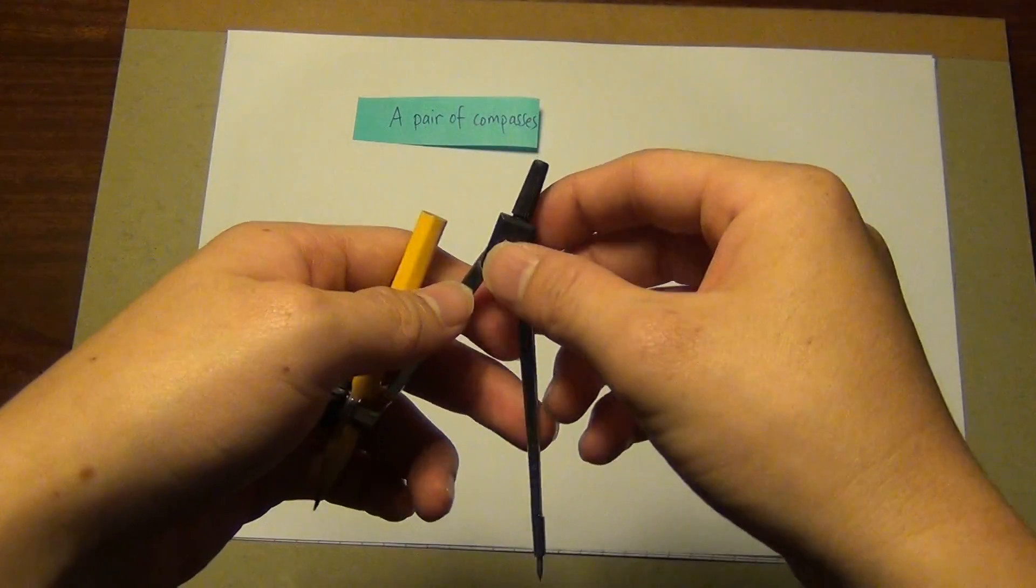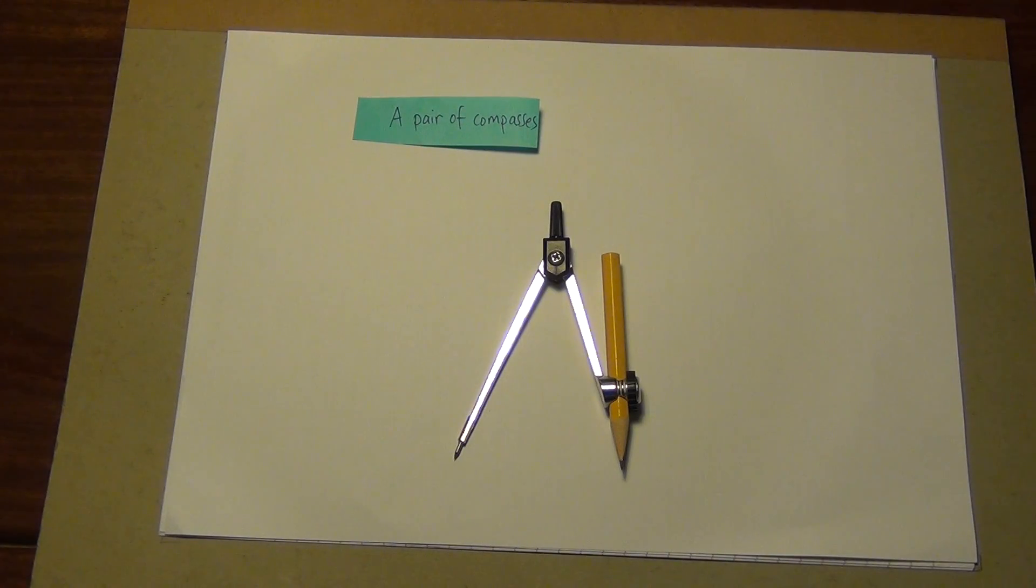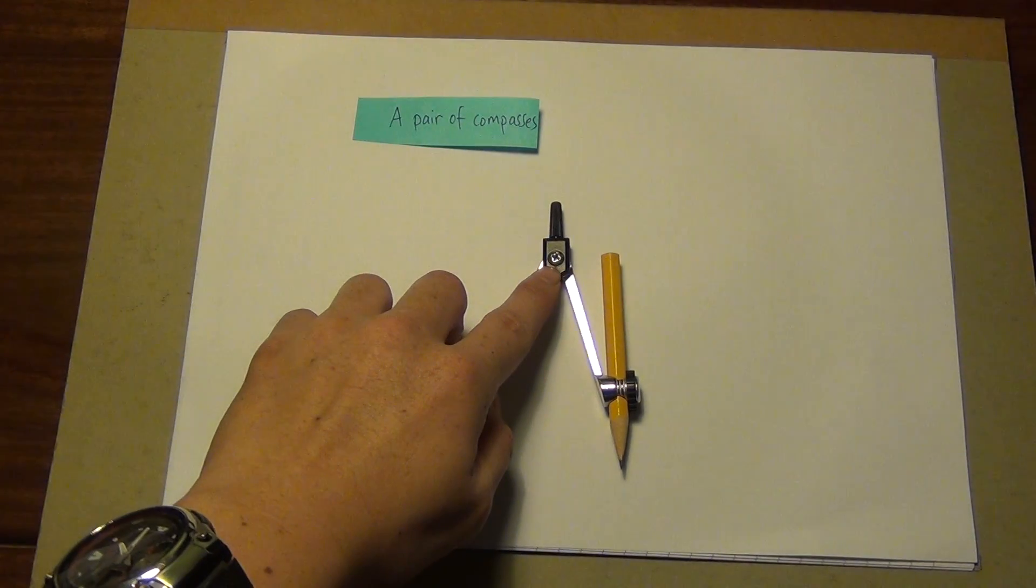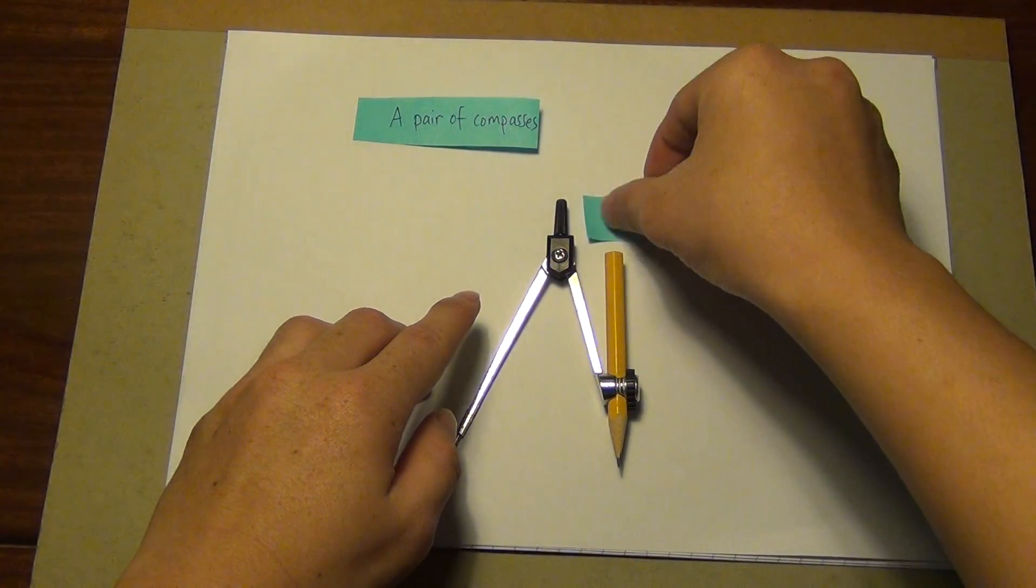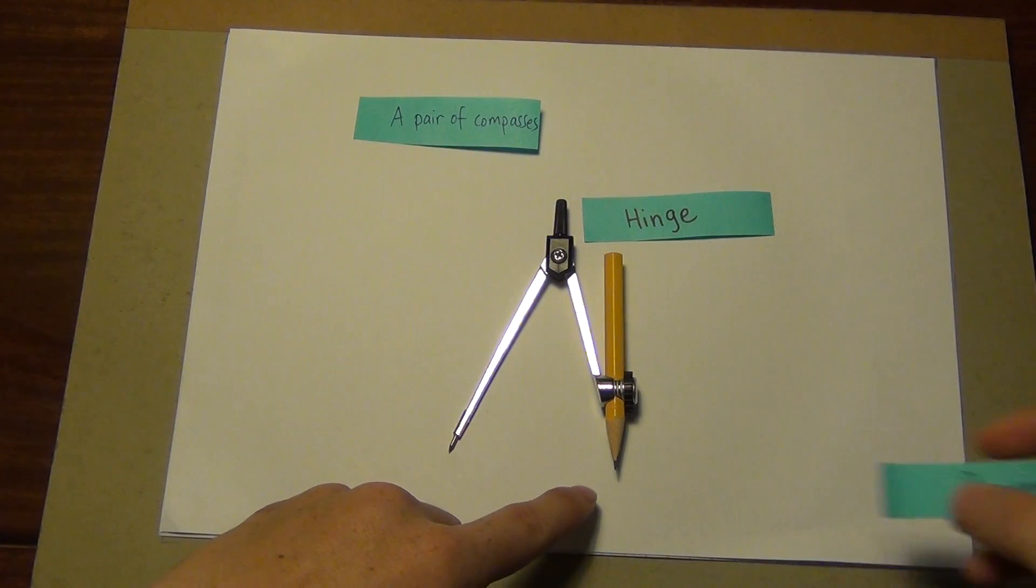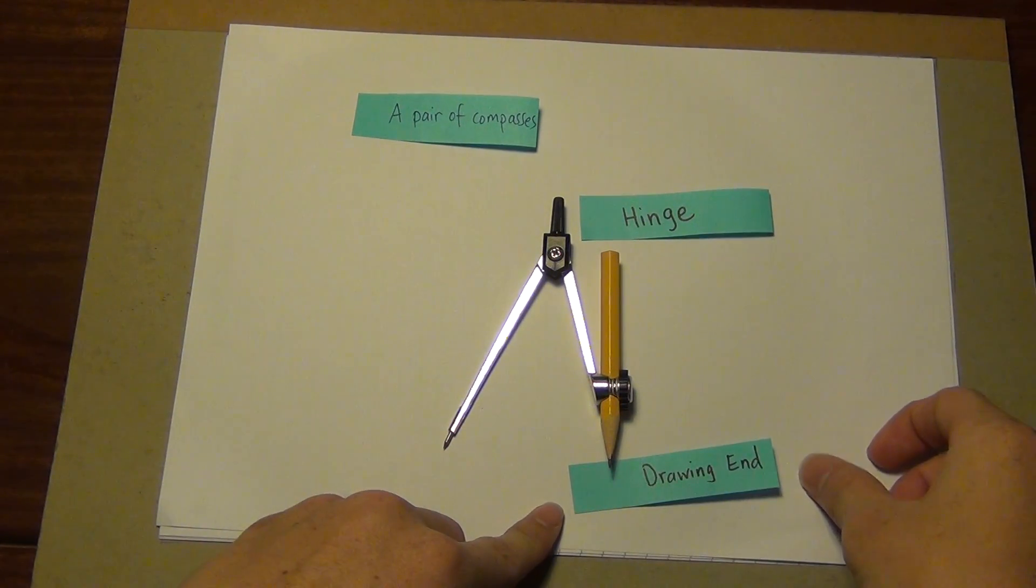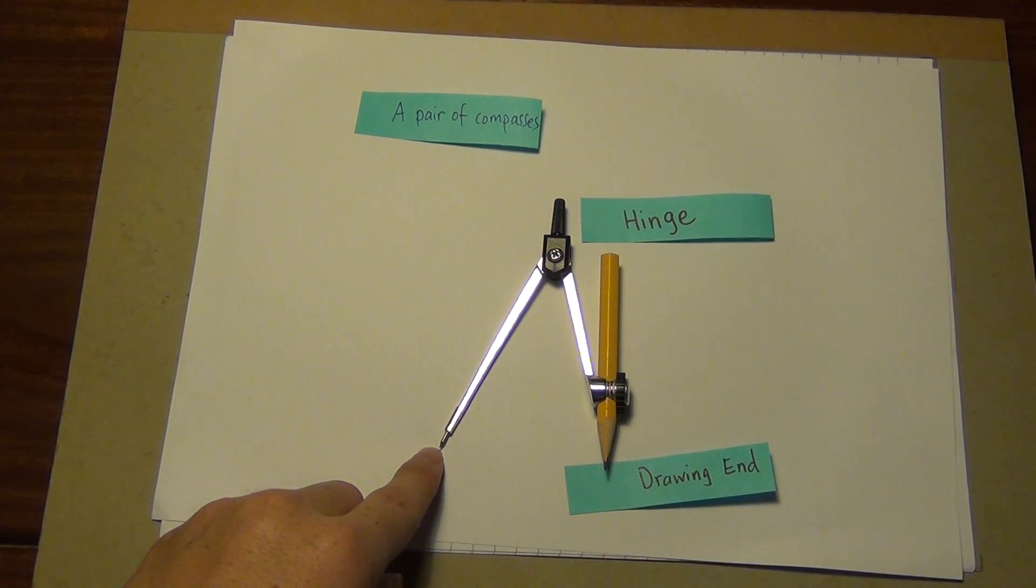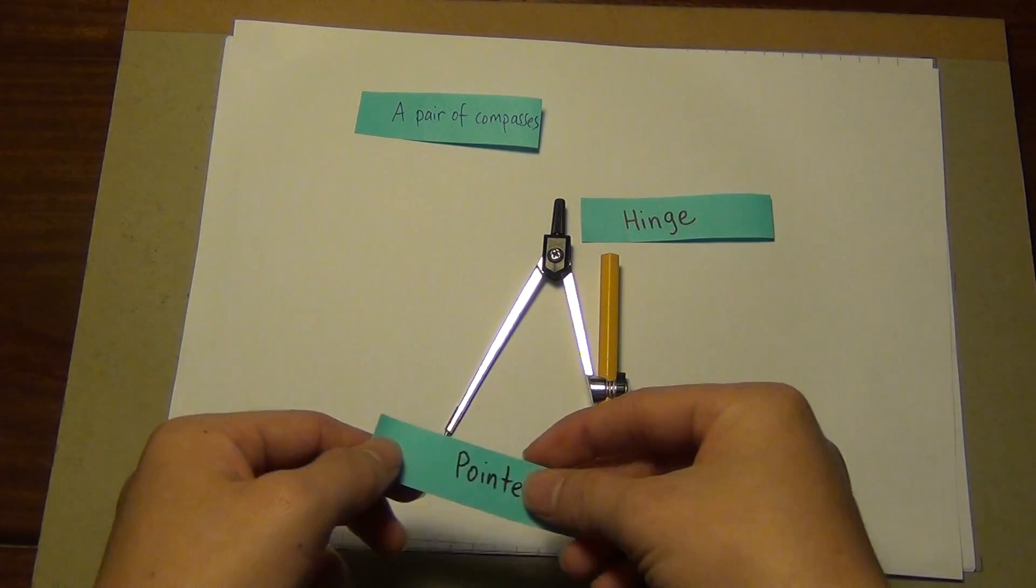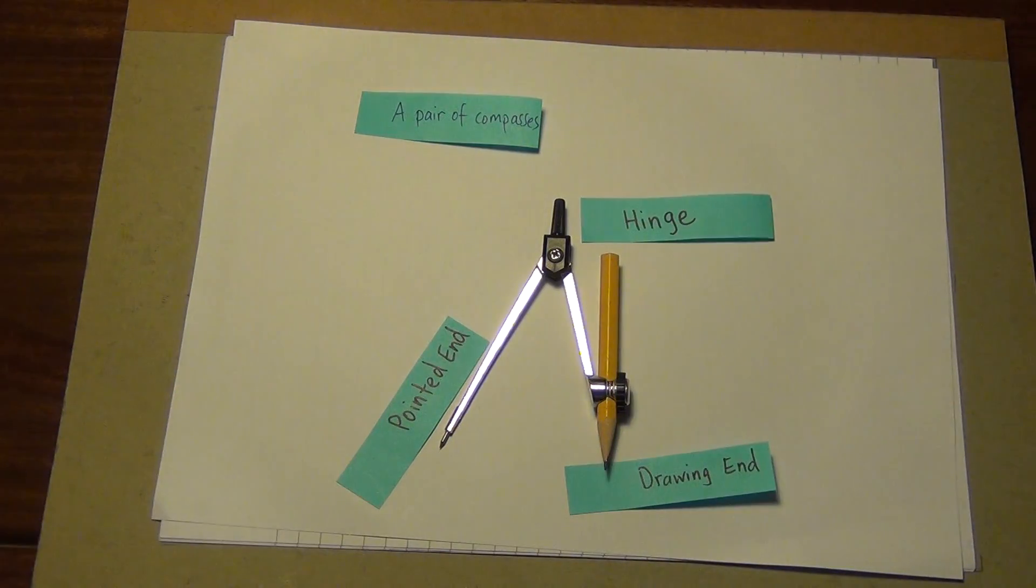There are some technical terms of a compass. Let me introduce them to you. This place at the top here is known as the hinge. The one with the pencil is known as your drawing end. And lastly, at this point where there is no pencil, it is known as the pointer end.